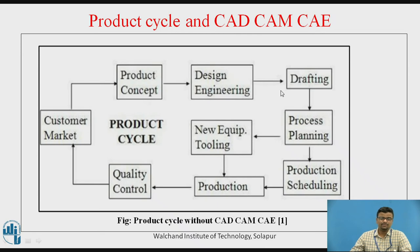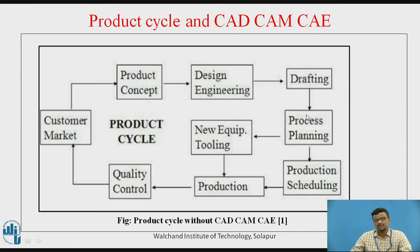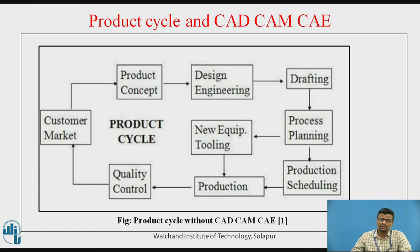To connect the design engineering or design department to the production or manufacturing department, there is always an intermediate department called process planning. Process planning is the scheduling and planning of each and every activity — start dates, end dates, the sequence of operations during production, the sequence of machine tools, and the material to be used during the manufacturing process.